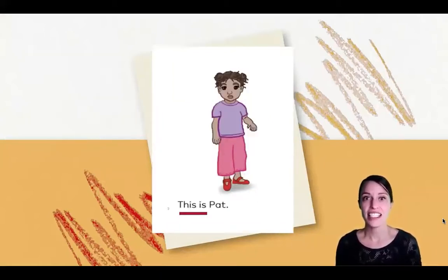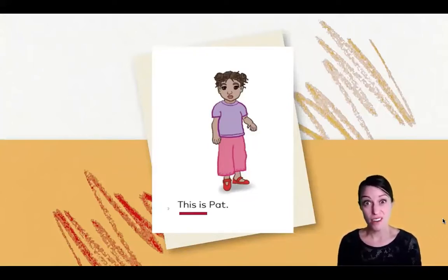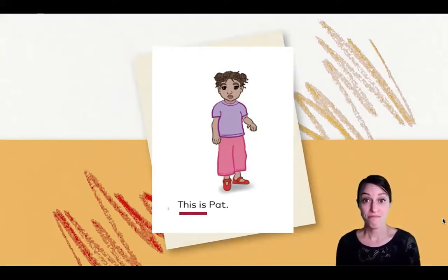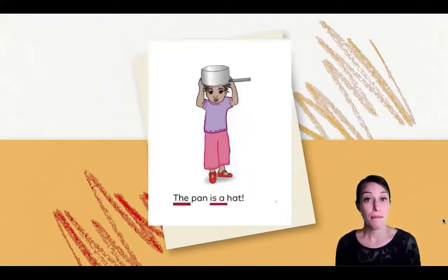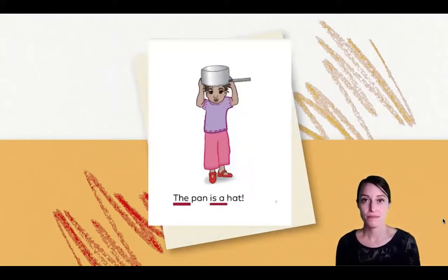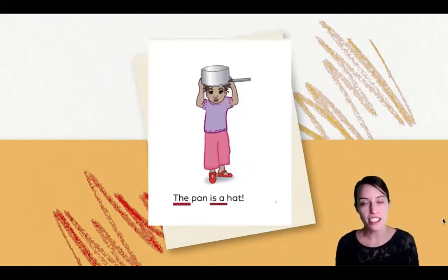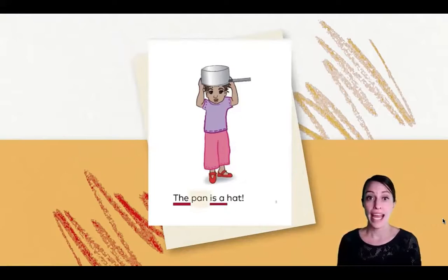This is Pat. Did you hear a word with a short vowel a? It is Pat. The pan is a hat. What's that? You heard two words with the short vowel a? You're right — pan and hat.